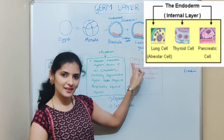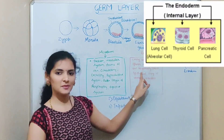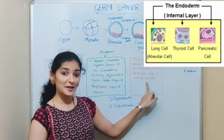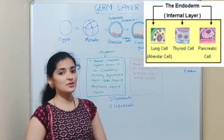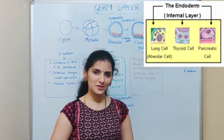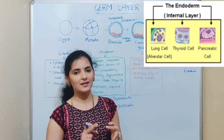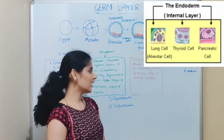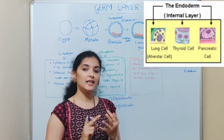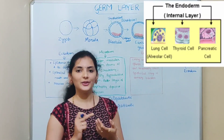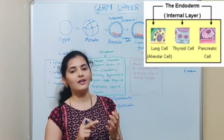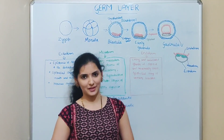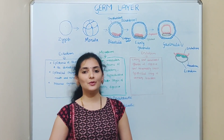The third layer is endoderm, the inner layer. It mainly forms the epithelial lining of the digestive system, respiratory system, and the lining of the urinary bladder. It also forms associated glands of the digestive system like the liver, pancreas, gastric glands, and intestinal glands. Additionally, it forms structures such as the trachea, larynx, thyroid, urinary bladder, urethra, and vagina.